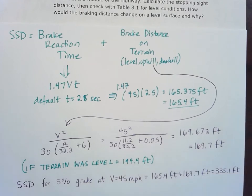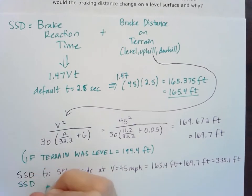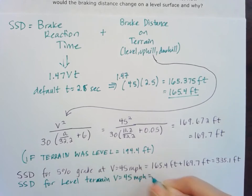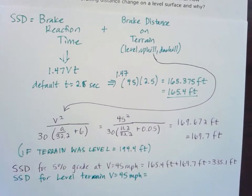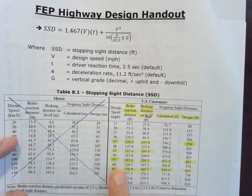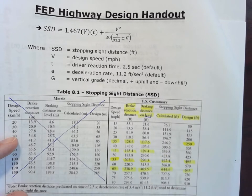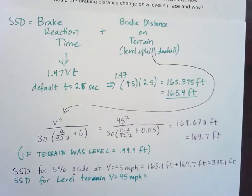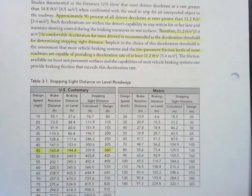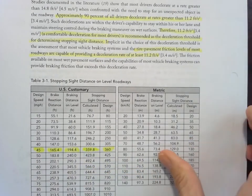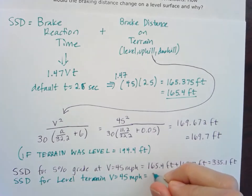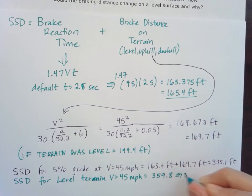And we can compare that to the stopping sight distance in our table for our level terrain for V equals 45 miles per hour. I'm going to pick that right off the table. You can use the one you have, which is the 2011 or check the 2018. I'm just going to compare calculated to calculated since I didn't round yet. So 359.8 for 2011, and also the same 2018, 359.8, just a different font. Now they go ahead and round that up to 360 for their design. And so we could go ahead probably and round ours up to 340.